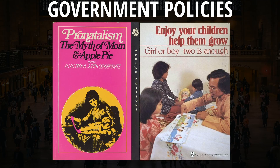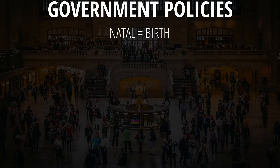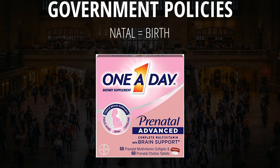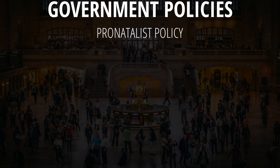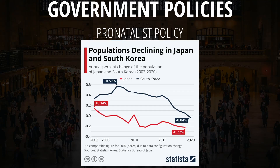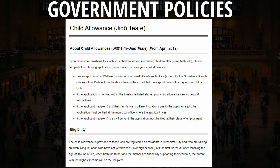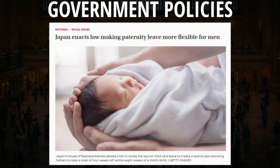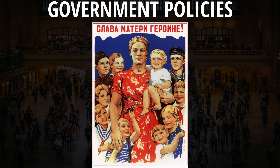Governments can implement different policies to counteract such drastic population changes, such as pro-natalist and anti-natalist population policies. An easy way to remember the difference is the root word 'natal,' which means birth — like prenatal vitamins that women take before giving birth. A pro-natalist policy encourages birth. Countries like Japan and South Korea, struggling with low birth rates, would implement pro-natalist policies by giving tax credits to people having more children, providing better child leave benefits, and might even utilize pro-natal propaganda.